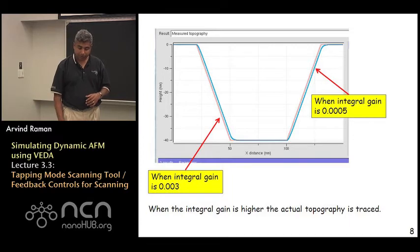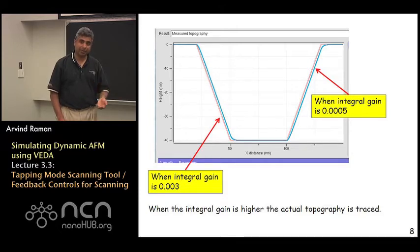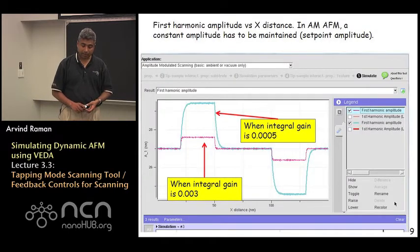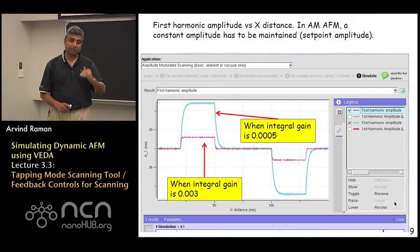But what you do notice by looking at it carefully is when you zoom in, you actually see that as the integral gain goes up, the measured topography comes closer to the actual topography.